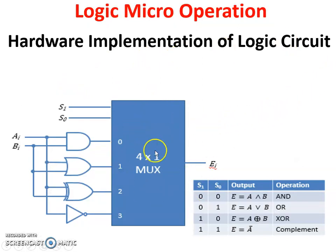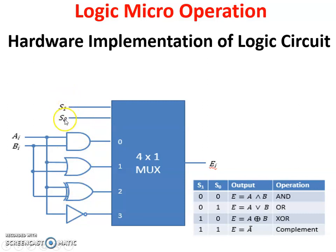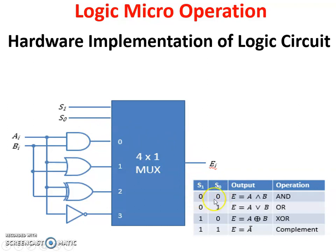In this circuit you can see a 4x1 MUX is used, and this is the output. These four are different gates used: AND, OR, XOR, and complement (NOT) gate. The output of this gate is based on signals S1 and S0. When S1 and S0 values are both zero, as per the table it activates the AND gate, and the AND gate output is given to the 4x1 MUX. Binary 00 is decimal 0, so this performs the AND operation.